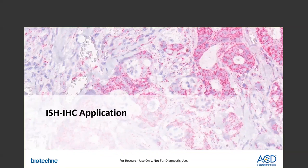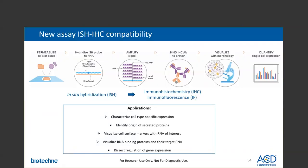Next, we'll focus on the new assay's IHC compatibility. A great way to further characterize cellular gene expression is to combine ISH with IHC on the same tissue to simultaneously detect RNA and protein. Because of the similar workflows between ISH and IHC — including sample fixation, pretreatment, probe hybridization, signal detection, and data analysis — ISH and IHC are ideal to combine into one sequential workflow in which the ISH assay is performed first, followed by the IHC assay.